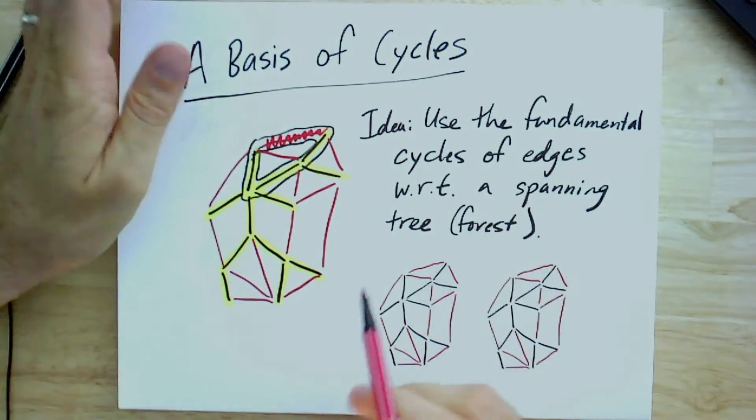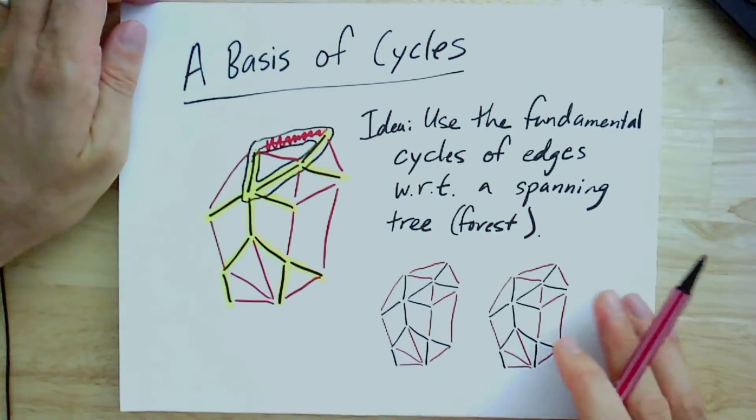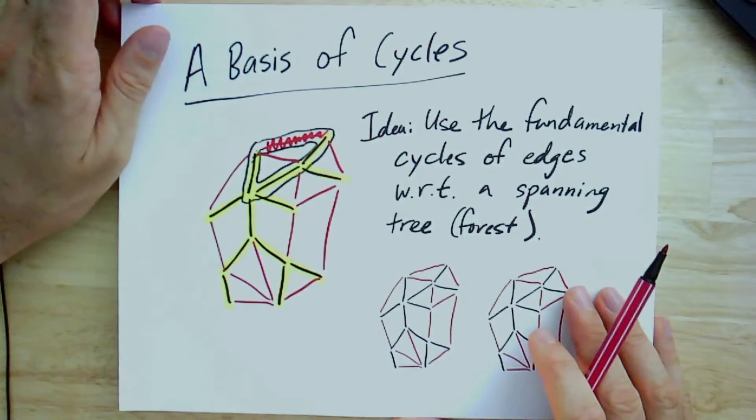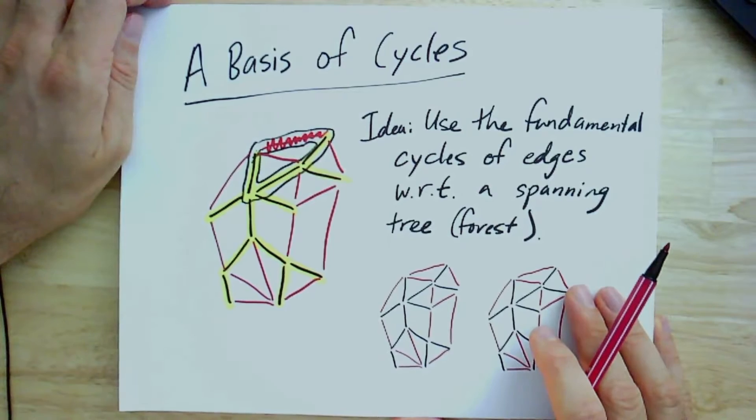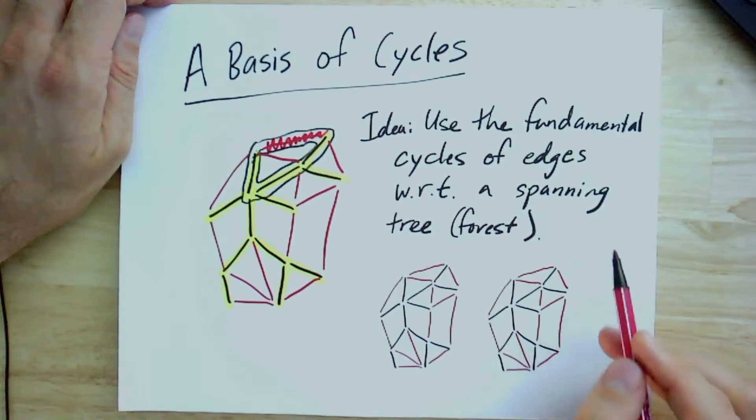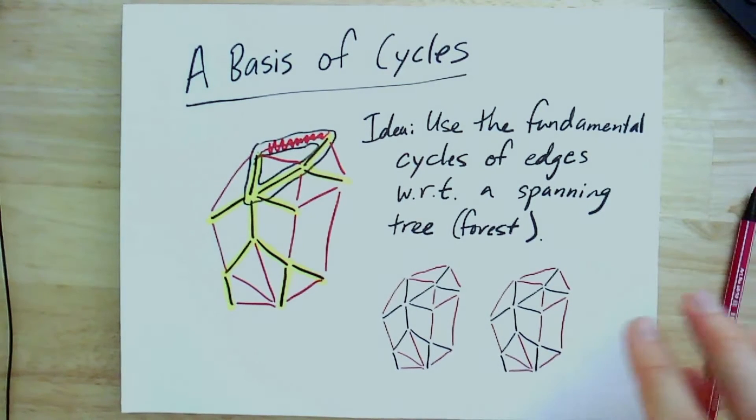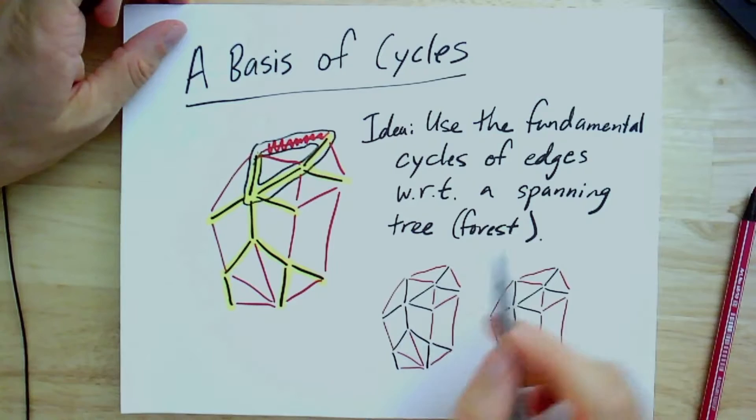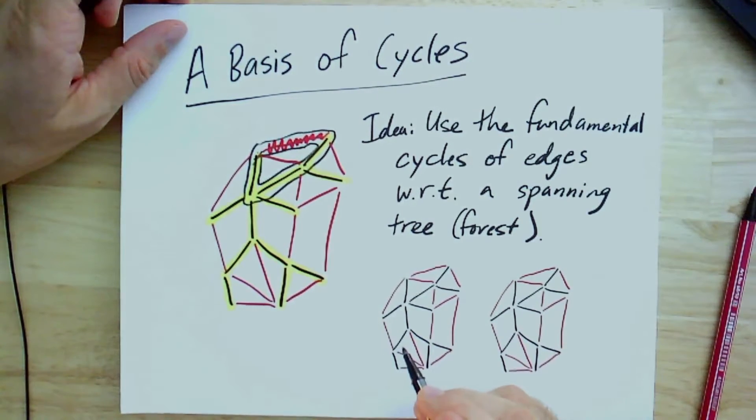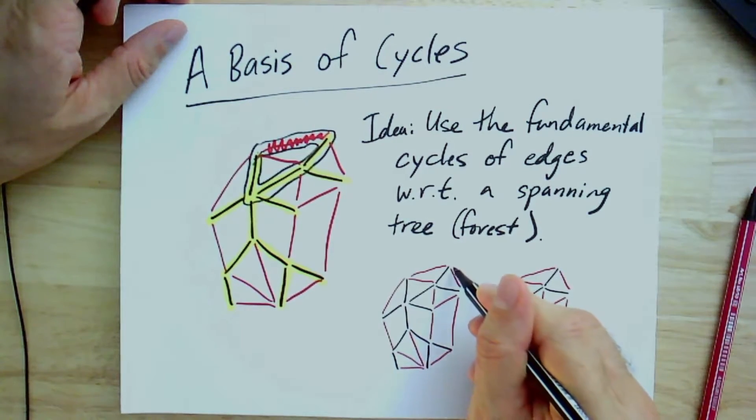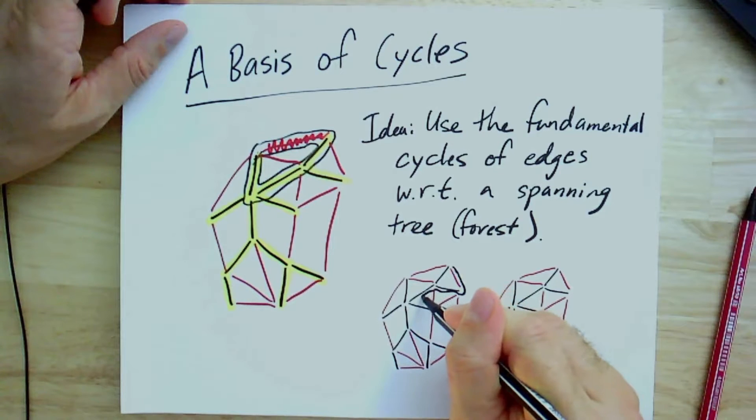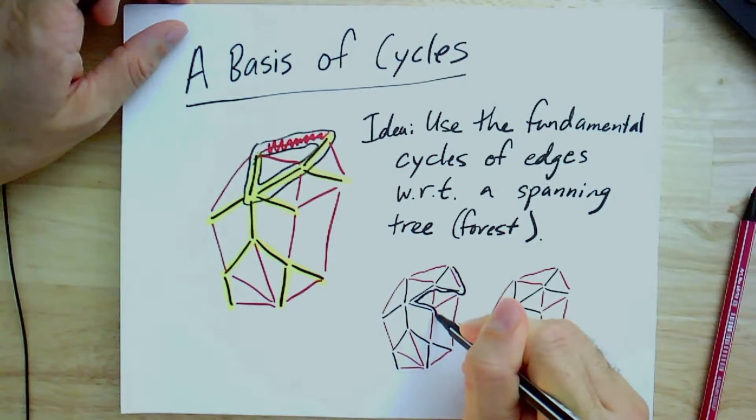So there is a way now of mapping edges that are not in the spanning tree to cycles in the graph. And we would like to say that that in fact generates all cycles in the graph. And if it generates all cycles, then it generates the entire cycle space. So let's see what it looks like. If I were to try to take an arbitrary cycle and then represent it as the sum of these fundamental cycles. So let me pick some funny cycle here. Let's go around here. I'll draw it next to the graph so hopefully it stays visible.